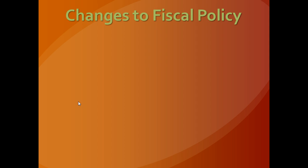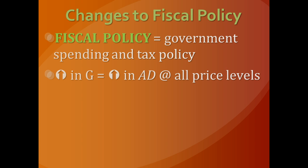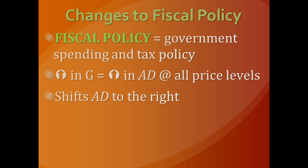Changes in government policy known as fiscal policy also affect aggregate demand. Fiscal policy is essentially any government spending or tax policy. An increase in government spending is an increase in G — a component of GDP — so it leads to an increase in aggregate demand and a rightward shift. If government cuts spending, aggregate demand shifts to the left. When it comes to taxes, if the government increases taxes, that reduces money available for consumption, so C shrinks — causing a left shift in aggregate demand. If the government cuts taxes, more money is available for consumption, and aggregate demand shifts to the right.